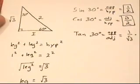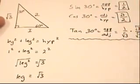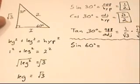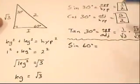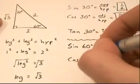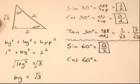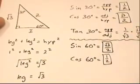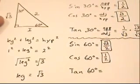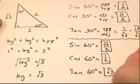Now we do the same thing for 60 degrees using our reference triangle. Sine of 60 degrees is opposite over hypotenuse: the opposite side is square root of 3 and the hypotenuse is 2, so sine of 60 degrees equals square root of 3 over 2. Cosine of 60 degrees is adjacent over hypotenuse: that's 1 over 2, or one-half. Tangent of 60 degrees is opposite over adjacent: square root of 3 over 1, which is just square root of 3.